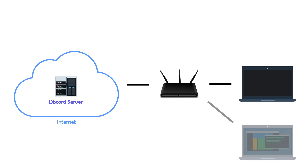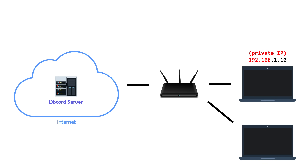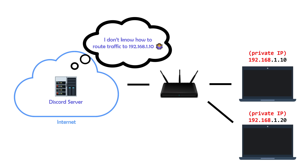As with most home networks, your computer has a private IP address, likely beginning with 192.168.x.x. It's common to have multiple devices on a home network, all with private IP addresses within the 192.168 range. All of these IPs are private addresses, meaning that they only hold a scope within a private network. They are not globally unique, and are not used for routing out on the open internet.